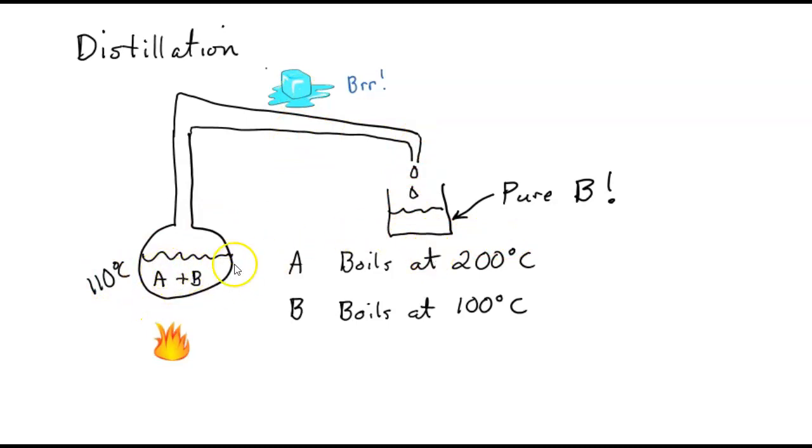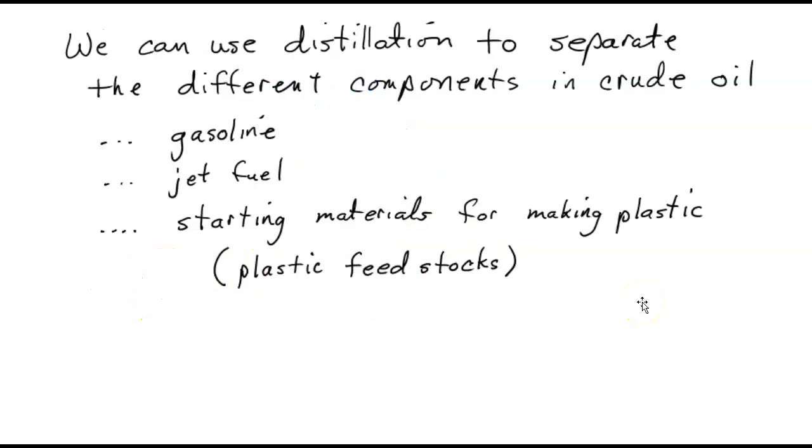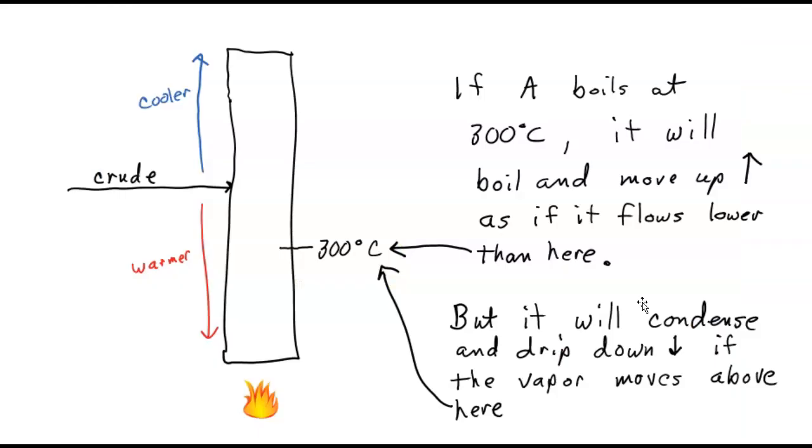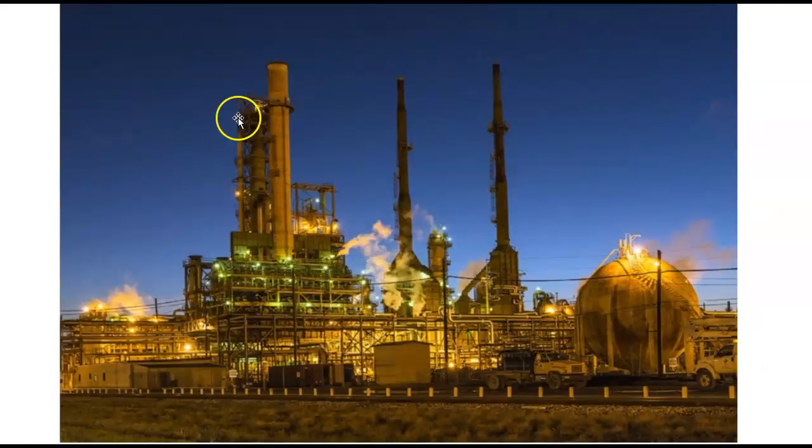Eventually we'll have pure A over here. So we can use distillation to separate the components in crude oil. There's gasoline in there, jet fuel, starting materials for making plastics. There's all kinds of good stuff in there. Here's an oil refinery. They look very pretty at night. And you can see that oil refinery has a whole bunch of tall columns here. These are called distillation columns.